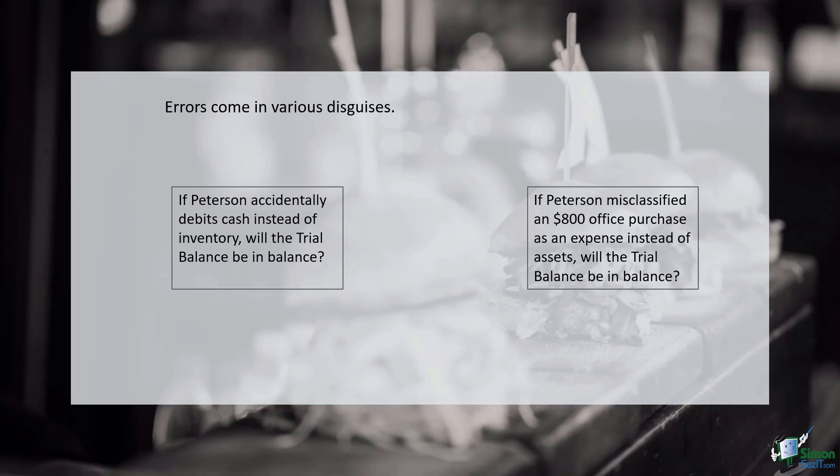Now, poor Peterson faces the error of principle, misclassifying an $800 office purchase as an expense instead of an asset. The trial balance, although in apparent harmony, fails to reflect this violation of accounting principles. In the realm of accounting, errors are the shadows that lurk in the corners. Peterson's journey underscores the importance of precision and classification, emphasizing that every transaction must align with accounting principles.